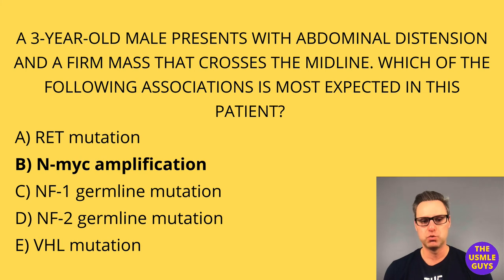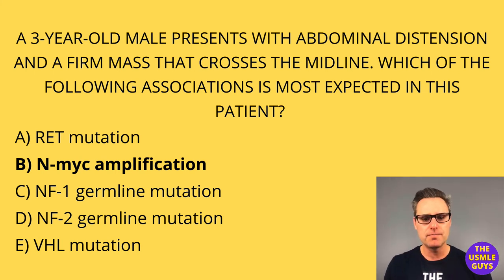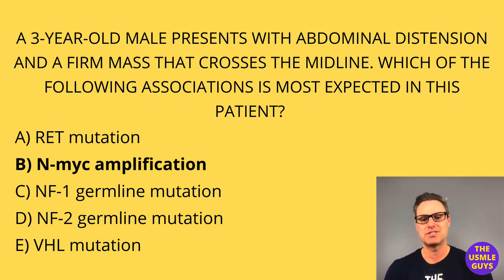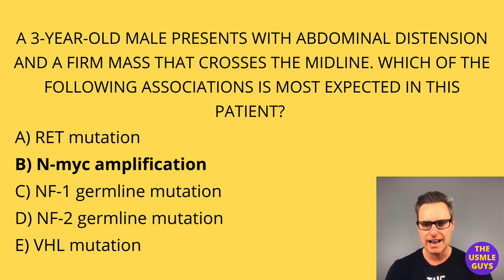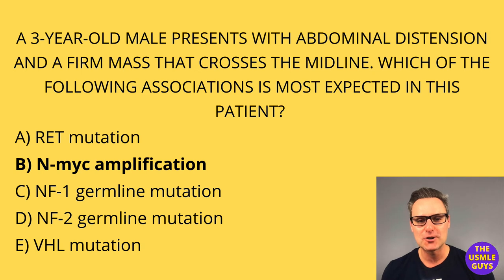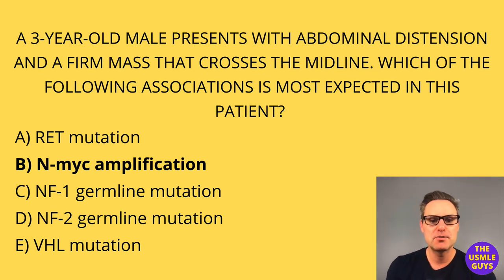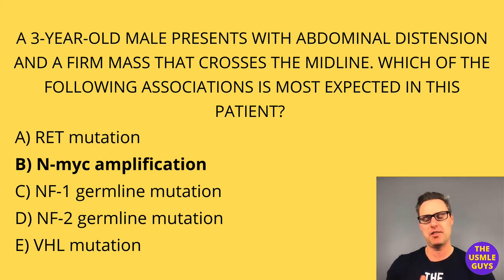Don't forget the rule of tens: 10% are bilateral, 10% are malignant, 10% are outside of the adrenals, 10% are seen in children, and 10% can calcify. The rule of tens also tells us that the overwhelming majority don't meet those criteria — so 90% won't be bilateral, 90% won't be malignant. The majority is what you really want to know.